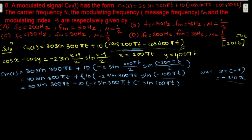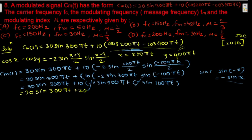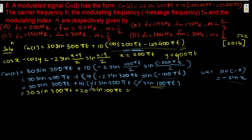The two minus signs cancel each other. So the final simplified equation is: c(t) = 30 sin(300πt) + 20 sin(100πt) · sin(300πt).